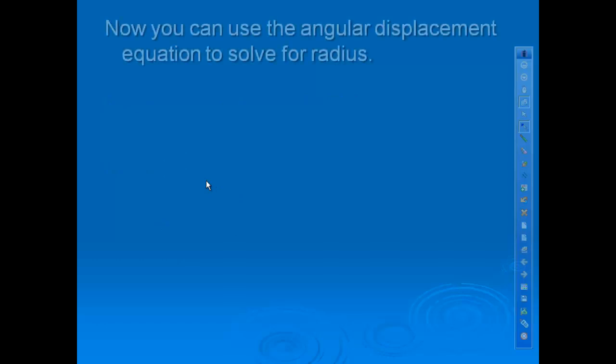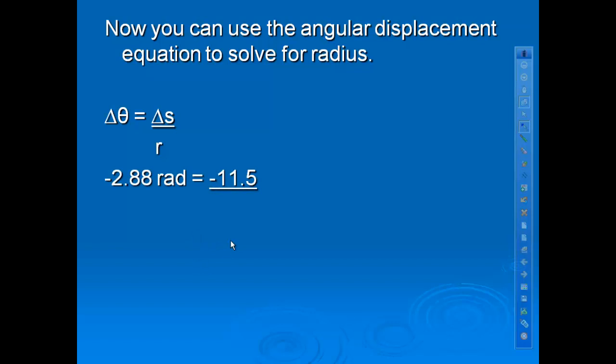Once we figure that out, then we can use the angular displacement equation to solve for our radius. So this is our angular displacement equation. We figured out our angular displacement from the angle that we traveled was 2.88 radians. Then, our arc length is 11.5 and we can solve for our radius. That means the radius of our ride is about 4 meters. Angular displacement, remember guys, this is just like regular displacement. It's describing how far around the circle you traveled.